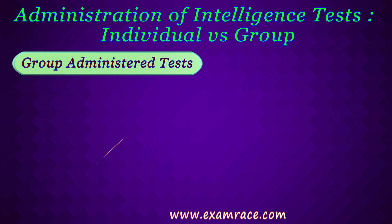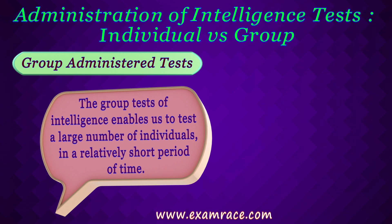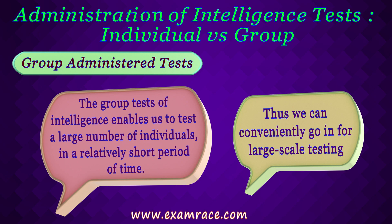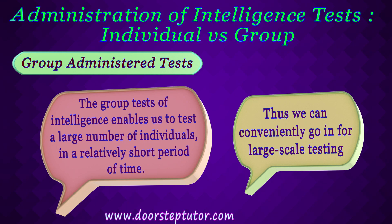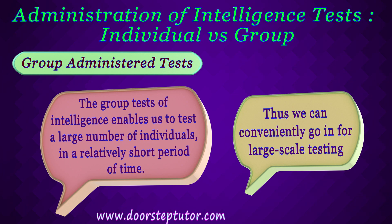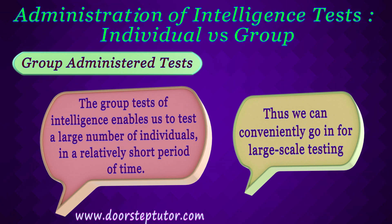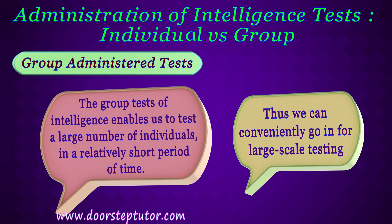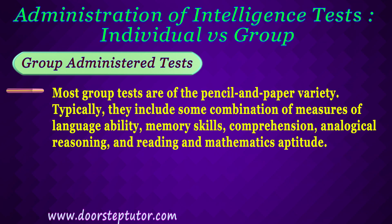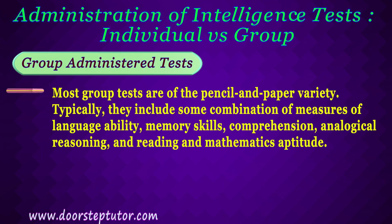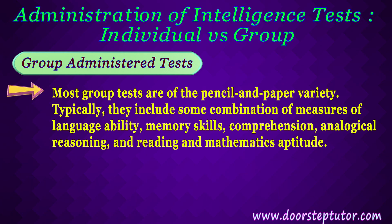Group administered tests of intelligence enable us to test a large number of individuals in a relatively short period of time, thus we can conveniently carry out large-scale testing. Statistics and norms prepared from large groups are definitely more reliable, objective and scientific than the norms available in individual testing from small numbers. Also, each group test can be used to test one individual only, and thus provides adequate opportunity to an expert tester to note personality pointers. Most group tests are of pencil-and-paper variety and are generally used in mass testing situations such as the military and schools.